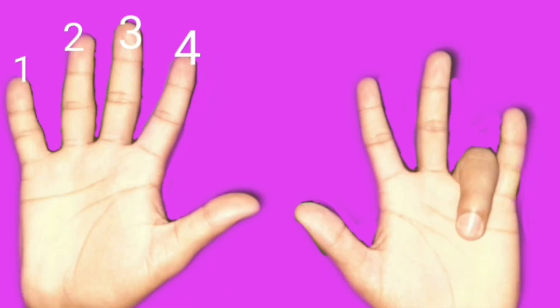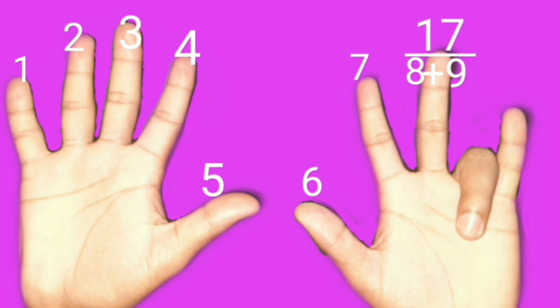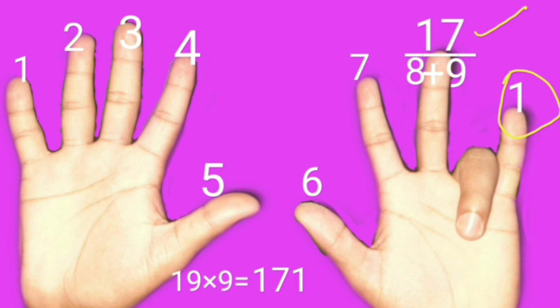Eight fingers are on the left side of the bent finger. Eight's next digit is 9. Eight plus 9 is 17. One finger is on the right side of the bent finger. Left side 17 is there, right side 1 is there. So 19 times 9 is 171.